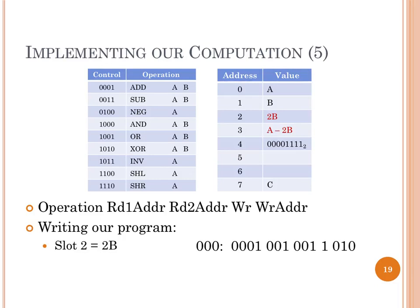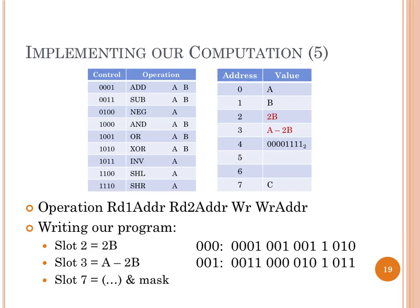Slot 3 equals A minus 2B: opcode 0011 for subtract, first input at address 0 (A), second input at address 2 (2B), write bit 1, write address 011 (address 3). Finally, slot 7 equals the bitwise AND: opcode 1000, read from address 3 and address 4, write bit 1, write address 111 (address 7). That's our complete program — three instructions translated into bit patterns.